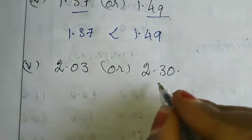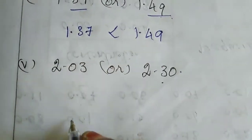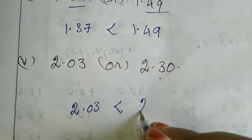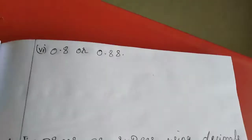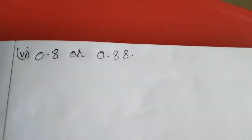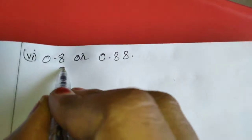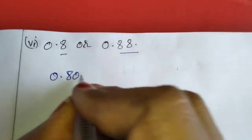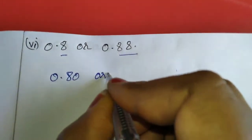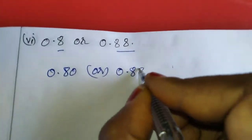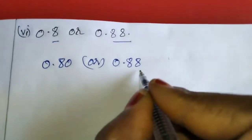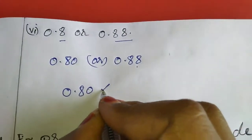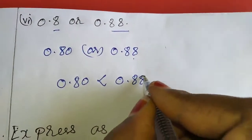Here which is greater? 2.30. So 2.03 is lesser than 2.30. Now for the sixth sum — here one digit, here two digits. So we can write 0.80 or 0.88. We know 0.88 is greater, so 0.80 is lesser than 0.88.